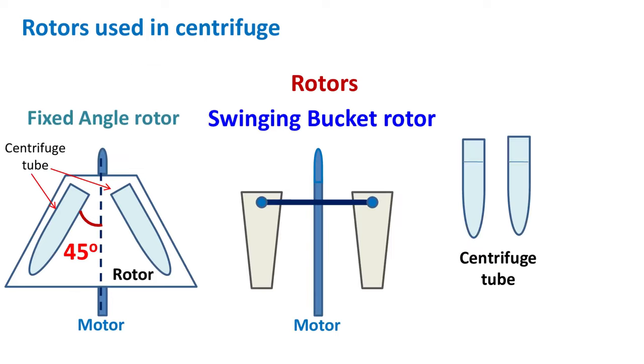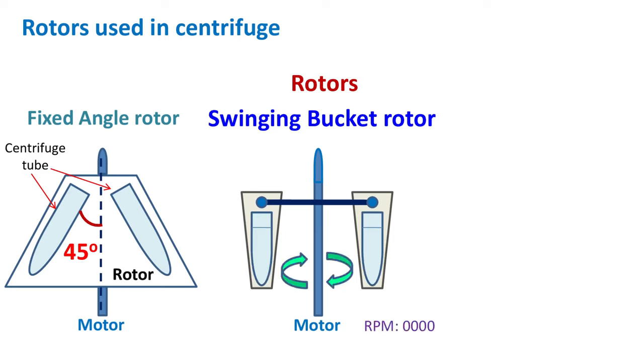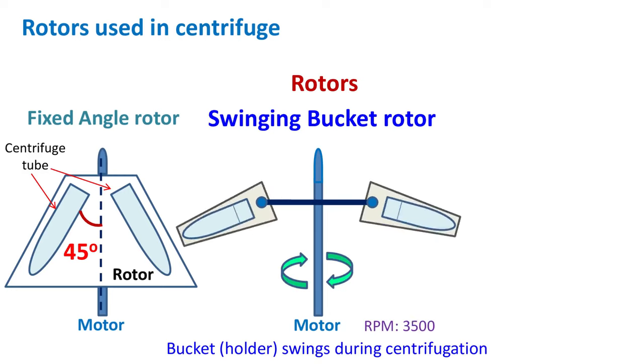Swinging bucket rotors. In this type of rotors, the centrifuge tubes are placed in a holder which is attached with a hinge. Initially, the tubes are vertical. When the centrifuge is switched on, the centrifuge tube attains horizontal position.